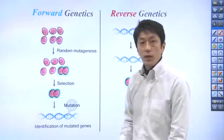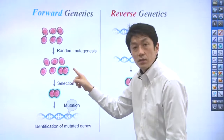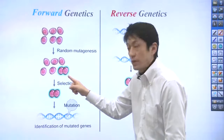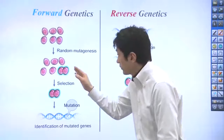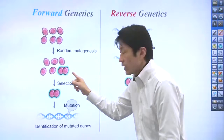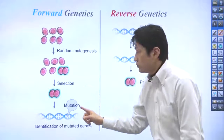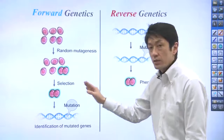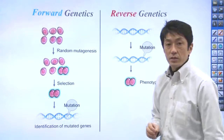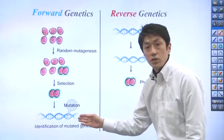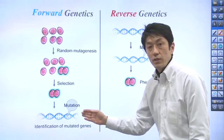For example, among healthy cells, this cell has a problem in cell division. You pick up this cell and analyze which gene is mutated in this affected cell. Such analysis allows you to identify the genes that play a role in cell division.